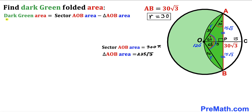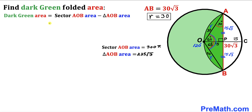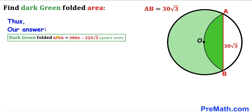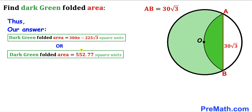For the final step, the dark green shaded region area = sector AOB area − triangle AOB area = 300π − 225√3 square units, which is approximately equal to 552.77 square units.